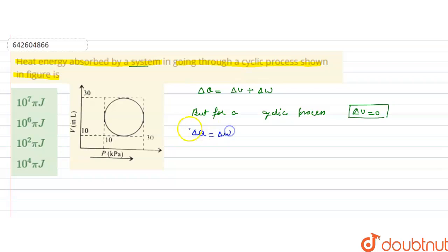It means, if we find the work done, that will be equal to the heat energy absorbed by the system. So, work done will be the area under the curve.